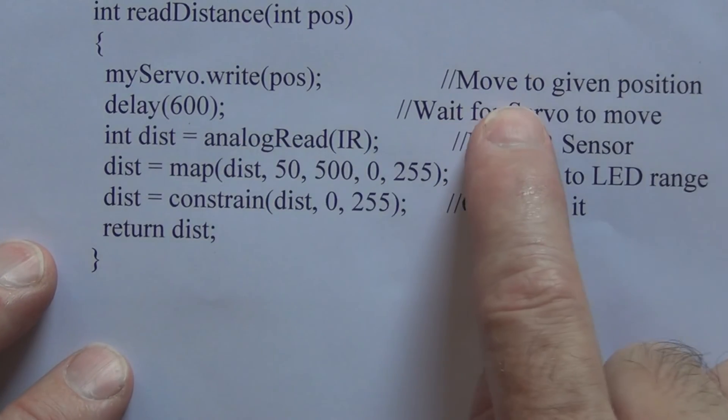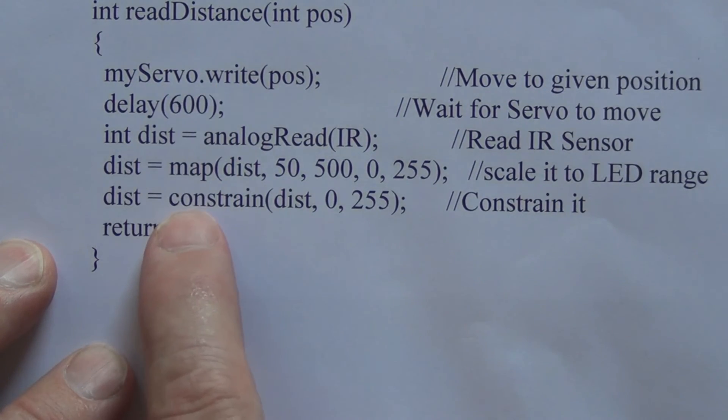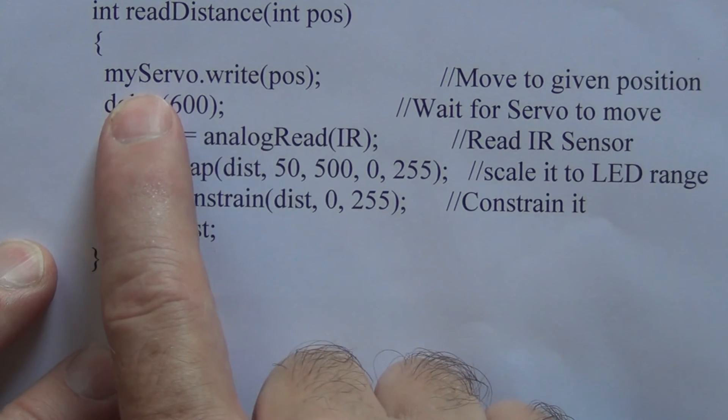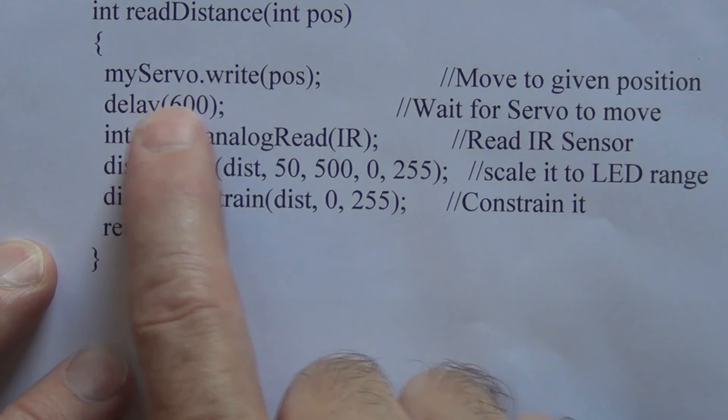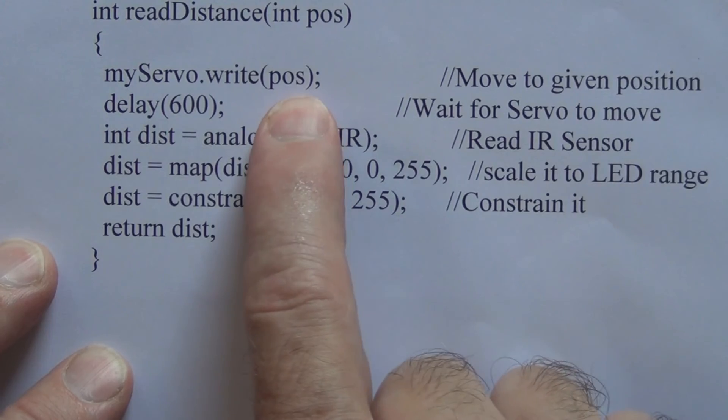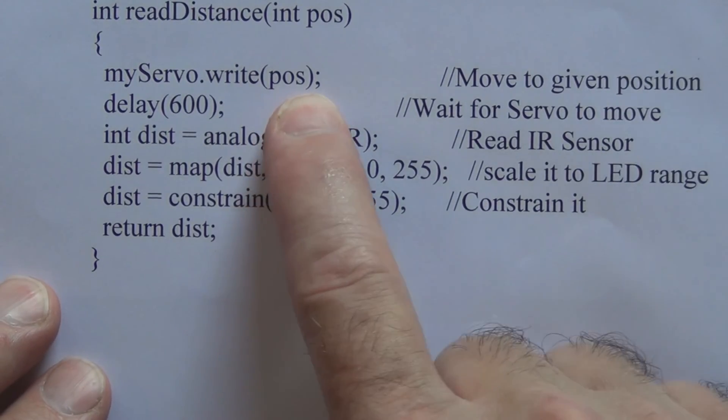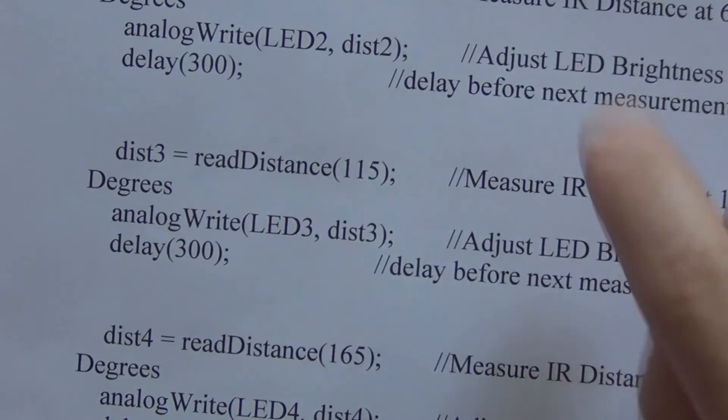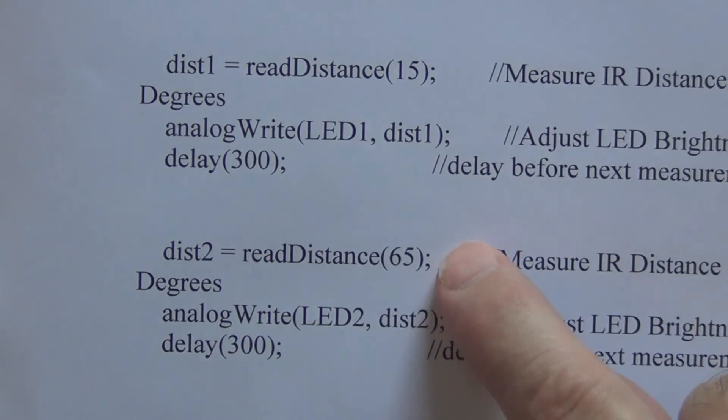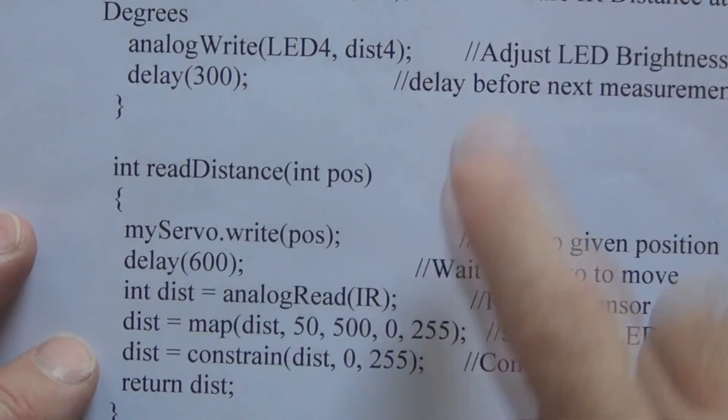Next we have a loop here on how we go about moving the servo to the position. So we have got myServo.write - this actually moves the servo to the positions we have already defined here at 15, 65, 115, and 165.